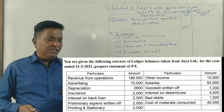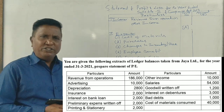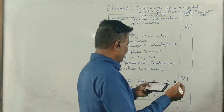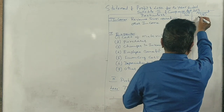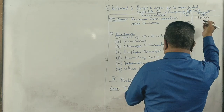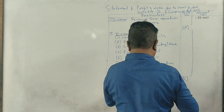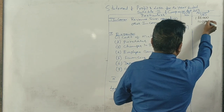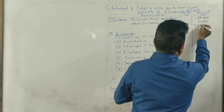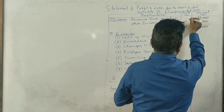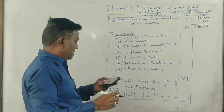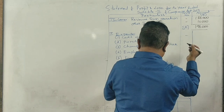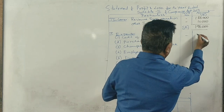First, revenue from operations — note to be added. The figure is $1,86,000. Other income is $10,000. The total income is $1,96,000.